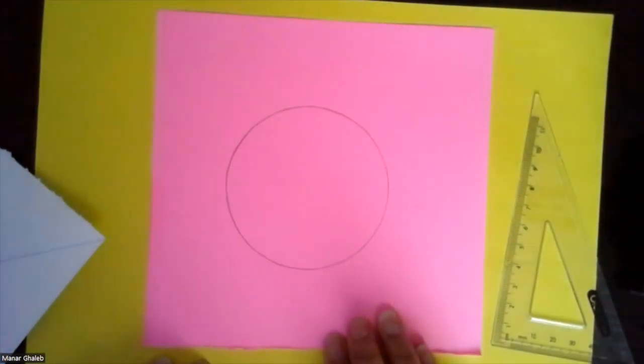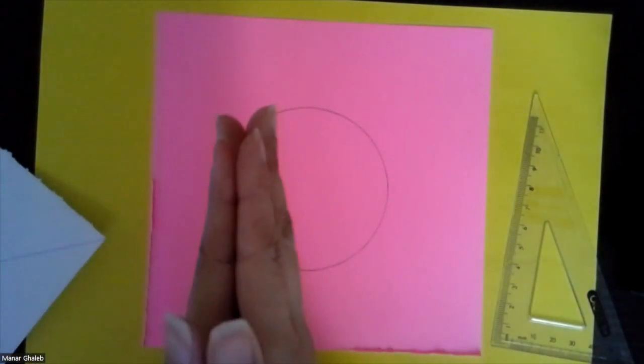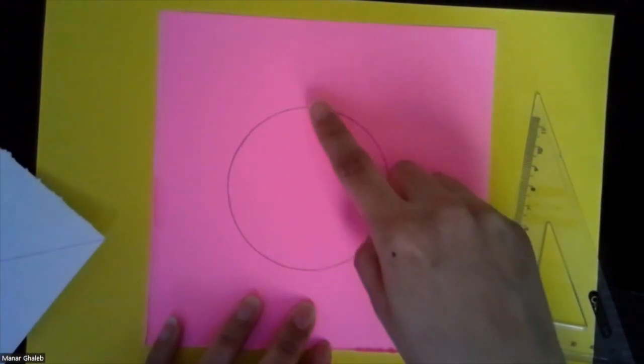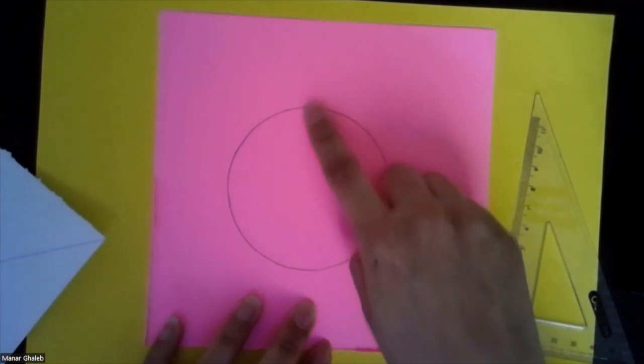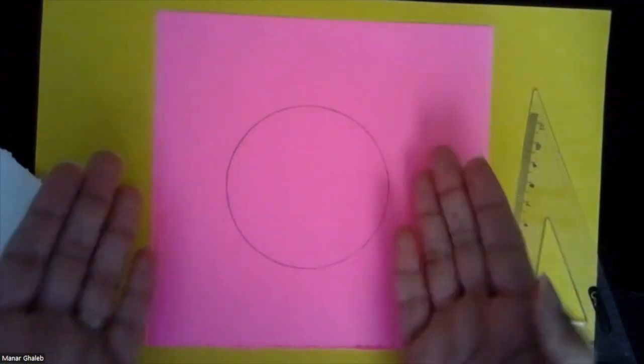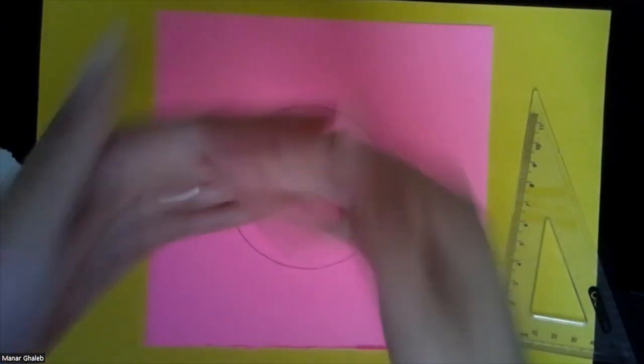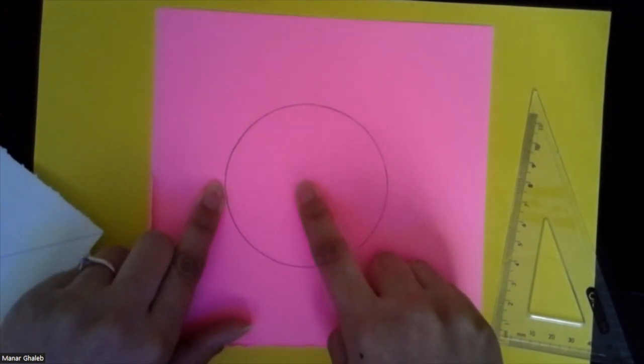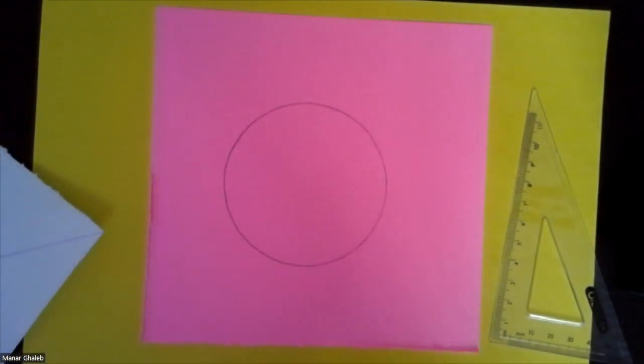And the reason why that works is because when I fold it in half perfectly, it creates a diameter. So a diameter is a line that goes from one edge of the circle to the other passing through the center. And then if I fold it again this way, I'm creating another diameter. So because they pass through the center, where those two lines meet would be the center of the circle.